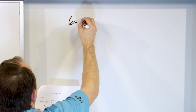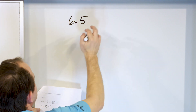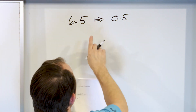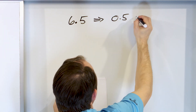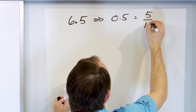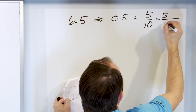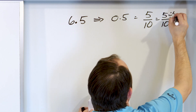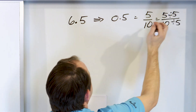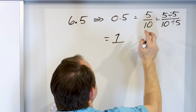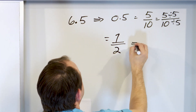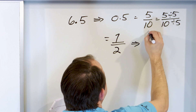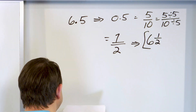We only have three more. Let's take a look at 6.5. We take 0.5 — it's 5 in the tenths place. But we can simplify by dividing top and bottom by 5. 5 divided by 5 is 1 and 10 divided by 5 is 2. So we have 6 and a half — 6 and one half — and that is the final answer.